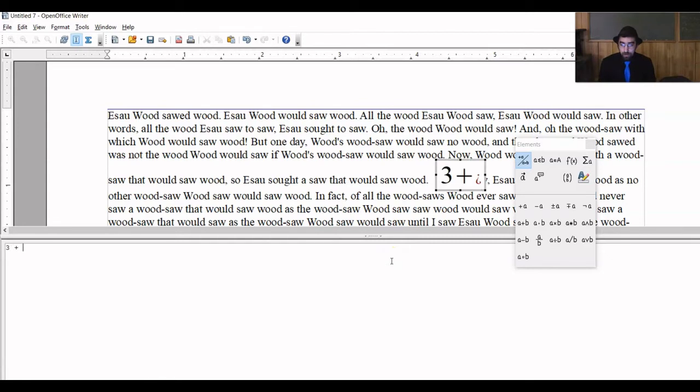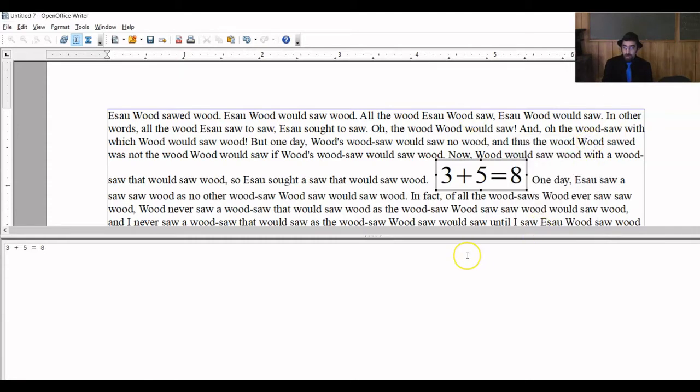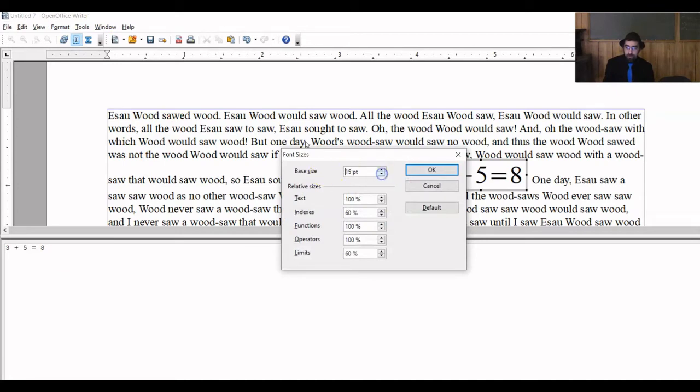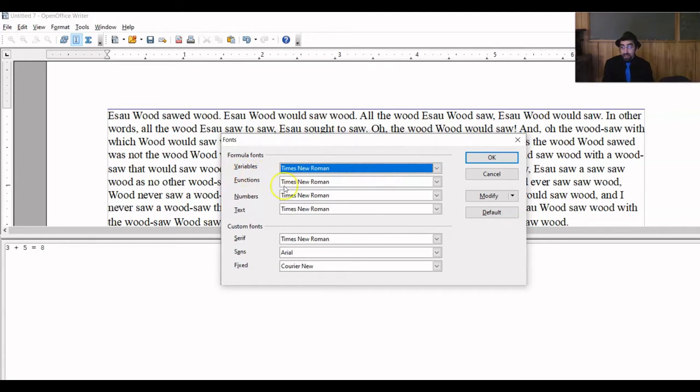So suppose I wanted to type in 3 plus 5 equals 8. Now, as you'll notice, these numbers are huge. That's because I also use OpenOffice for my PowerPoint style presentations that I use to film my Doctor Nighttime videos. There, you need everything to be bigger in order for it to show up properly. But there's an easy way, once you're in this formula mode, when you click Format, one of the things they have is font size. And I can reduce the font down to a standard 12 points.